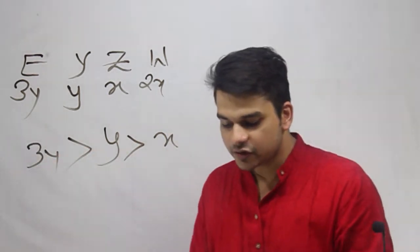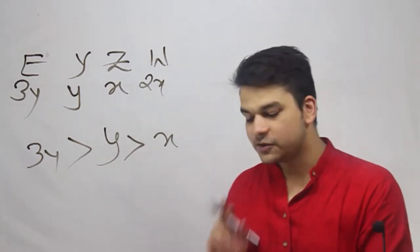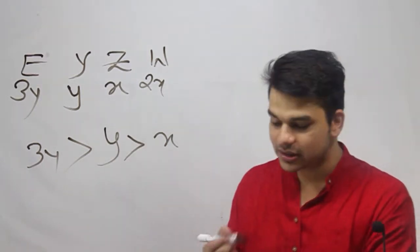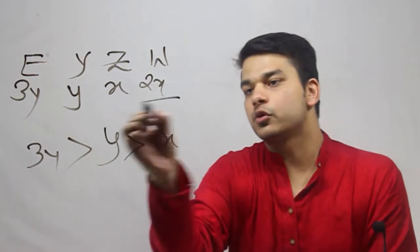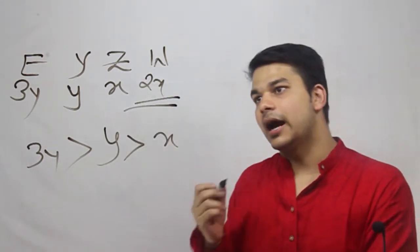Now the question says, which of the following can be inferred? Option A says, Yukesh is older than Vahida. Now look, Vahida is 2x and Yukesh is y.